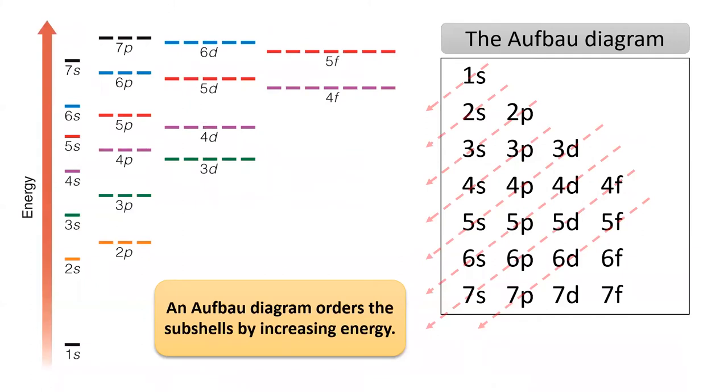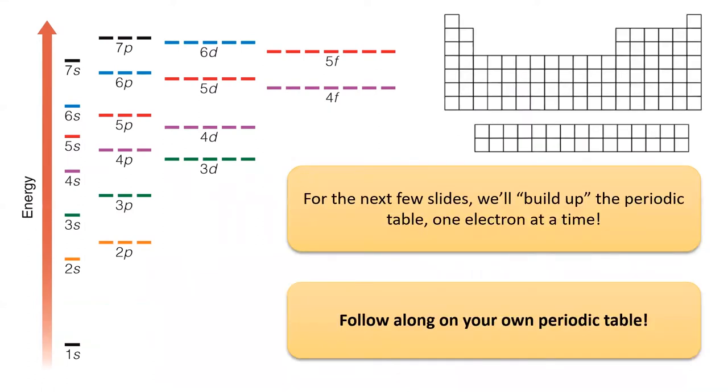Last lesson, we learned how to draw an Aufbau diagram, which orders the subshells in order of increasing energy. In this lesson, we'll build up each element in the periodic table by adding electrons to the lowest available energy level.